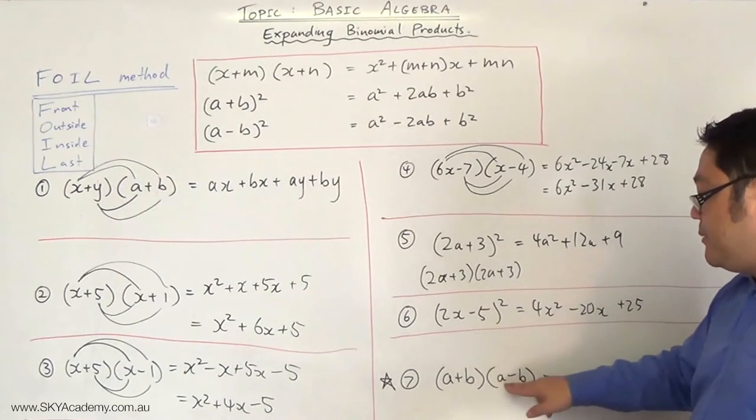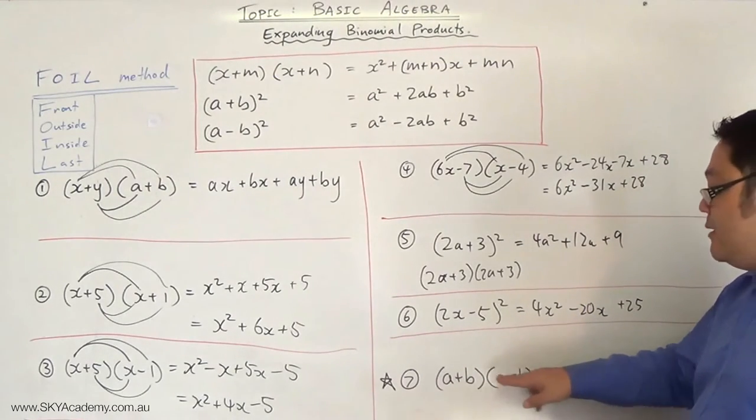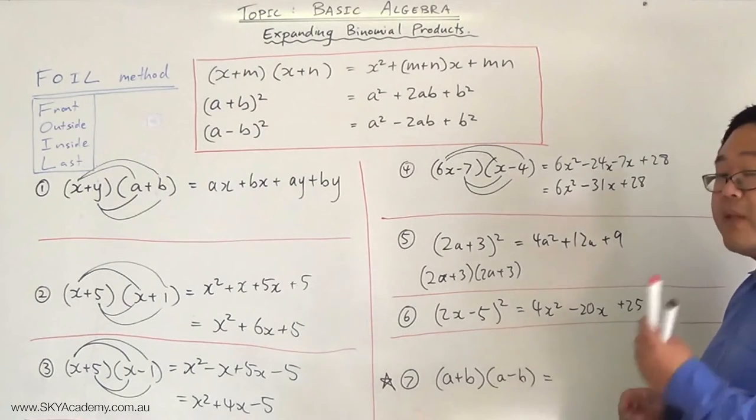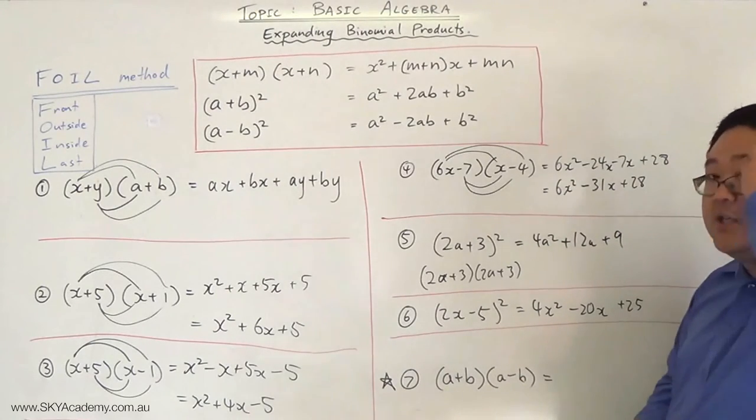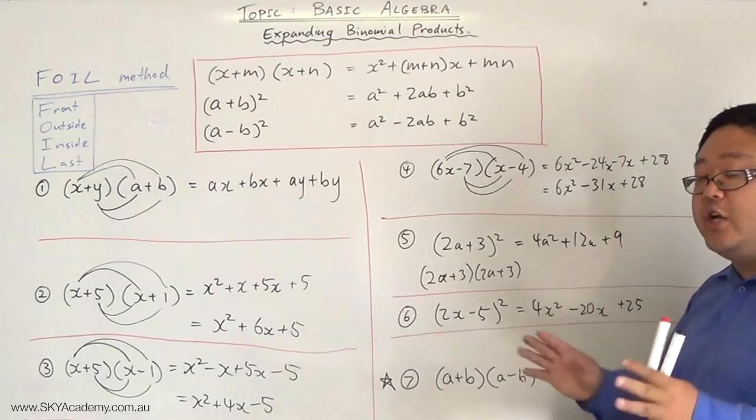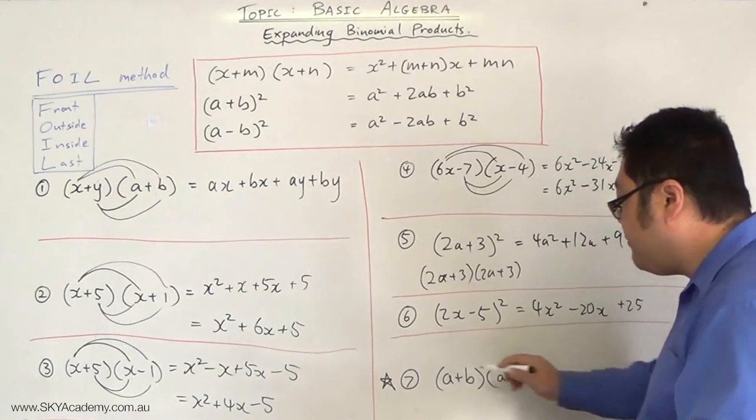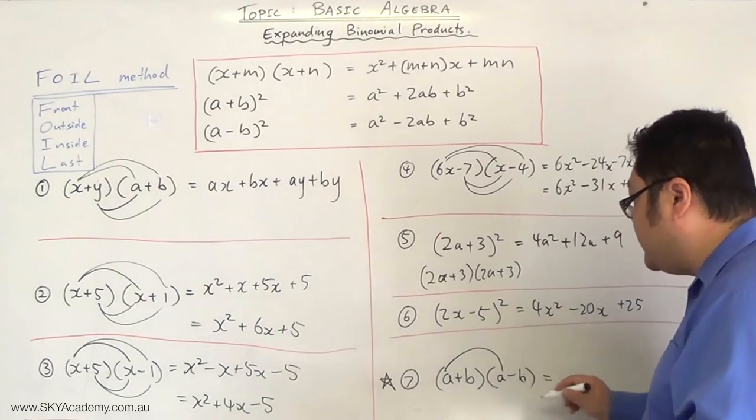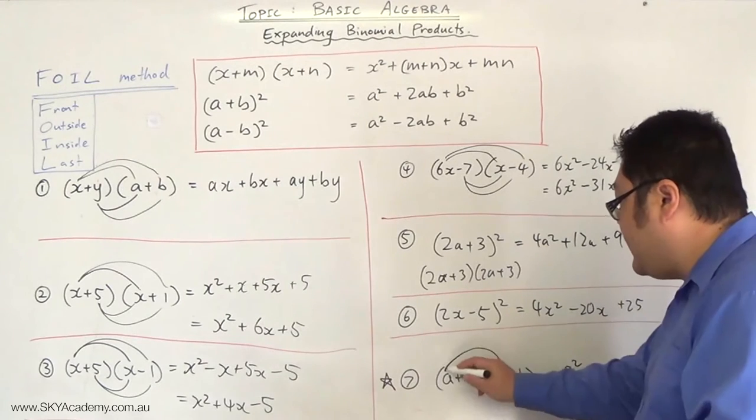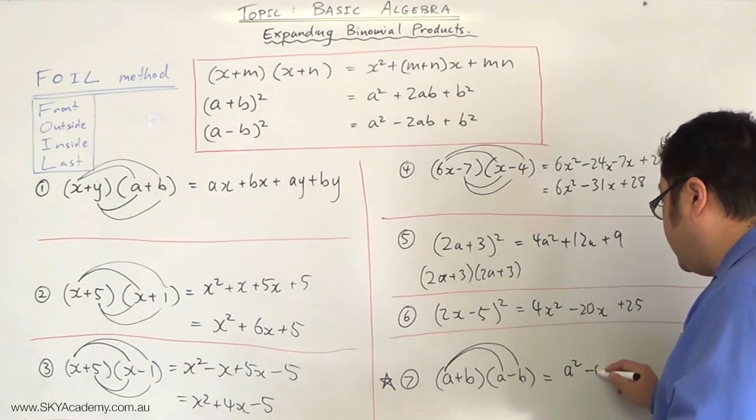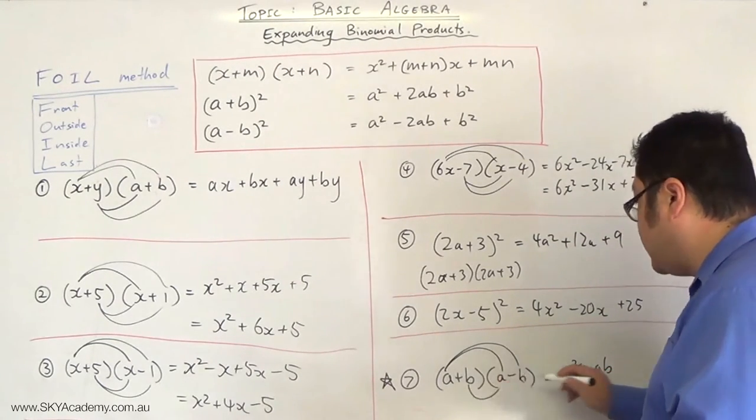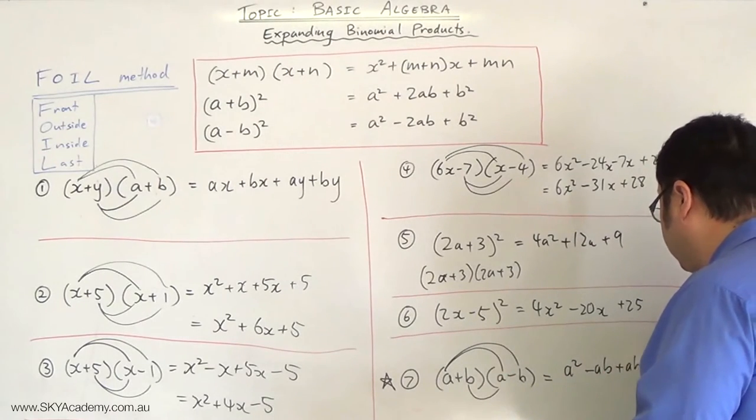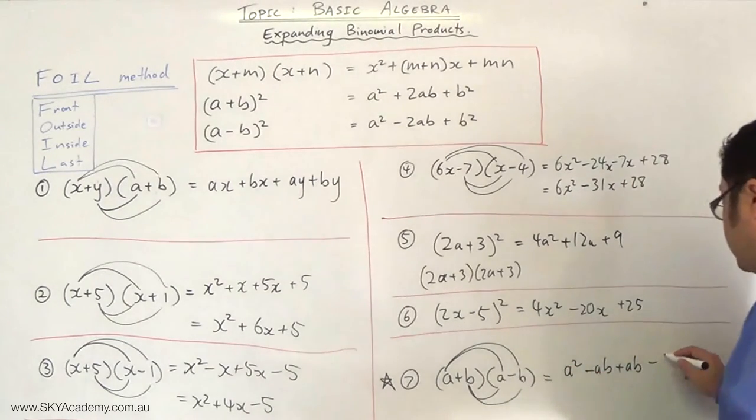We've got a sum multiplied by a difference, plus multiplied by a minus. And what you get is the difference of two squares. I'll show you exactly what I mean. A squared. A times A is A². A times minus B is minus AB. B times A is plus AB. B times minus B is minus B².